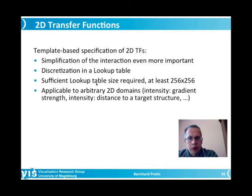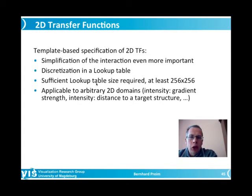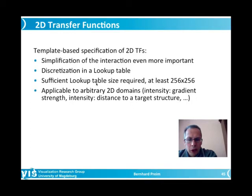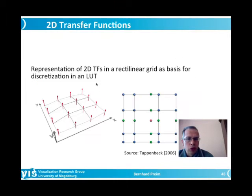Template-based specification is helpful. Similarly to one-dimensional transfer functions, the 2D transfer function should be stored in a lookup table so it does not have to be explicitly evaluated for every voxel. For a minimum useful resolution of 256 entries in both dimensions, we need a lookup table size of 65,536 — that is 256 squared. Examples include intensity and gradient magnitude, or intensity and distance to a target structure.